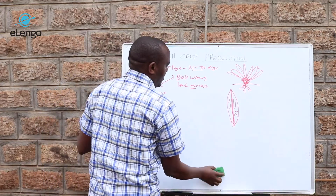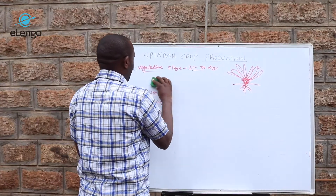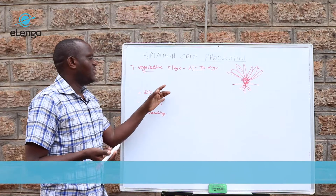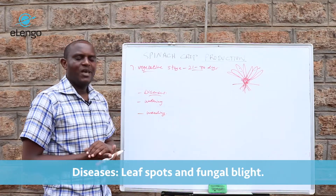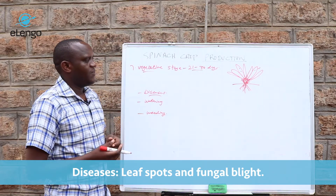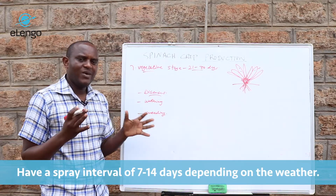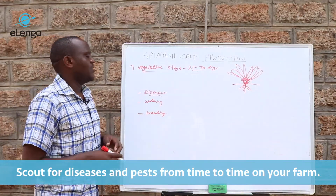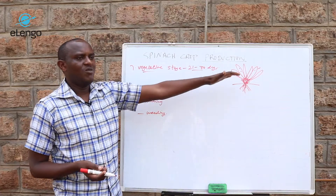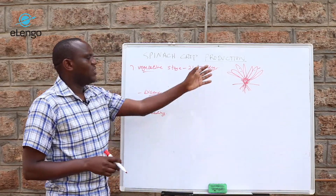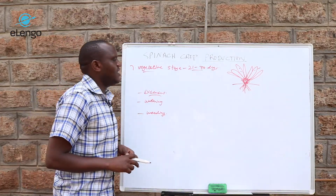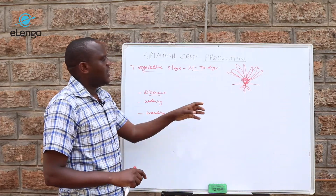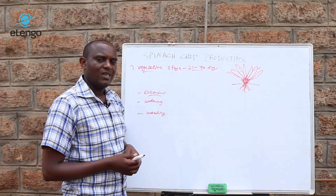The same diseases mentioned during the starting stage are the same diseases that are important here, and the same chemicals applied are the same used here. The same 7 to 14 day spray schedule depending on the weather is very important, and scouting is also very important because the leaves are bigger, meaning a bigger area for disease attack. Nematodes and root rot are not a concern here since they were controlled during the starting stage. Leaf spots and fungal blight are the most important diseases in this stage.